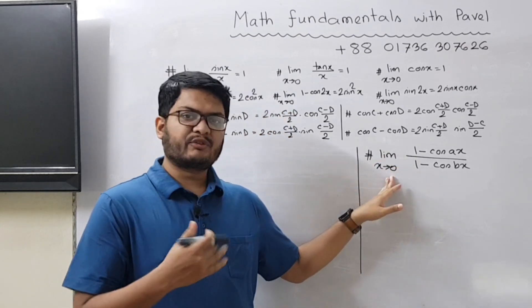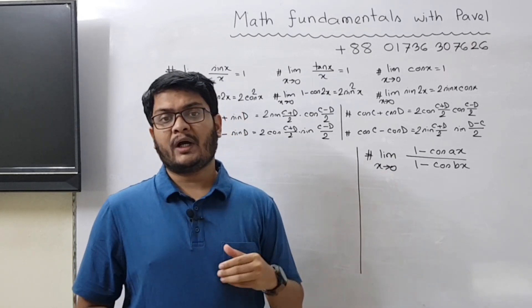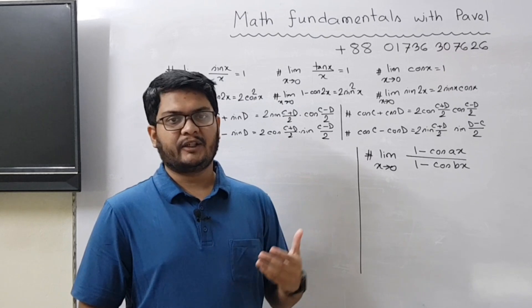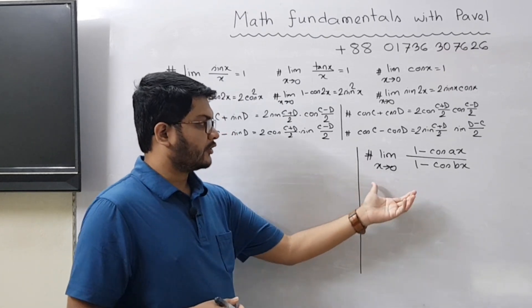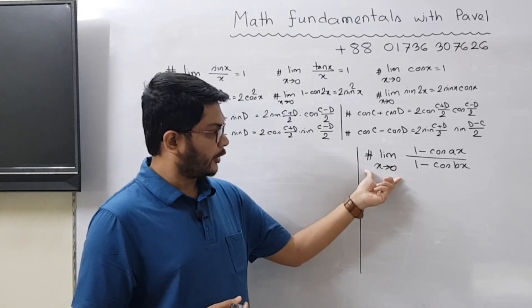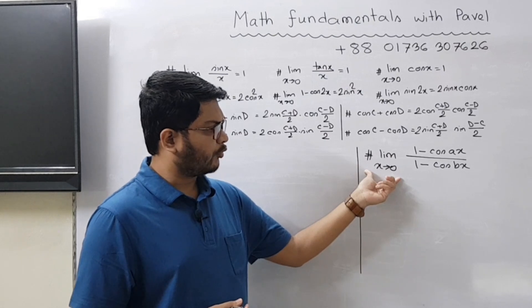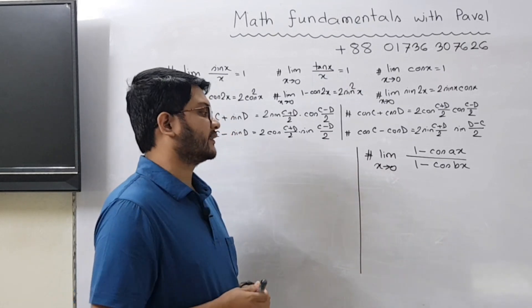In the previous few lectures we have solved some similar type of questions. So I hope those who have watched those lectures it would be very easy for you to understand this particular lecture. Let's start. As you can see the question says limit x tends to 0 and in the numerator we have 1 minus cos ax and then in the denominator we have 1 minus cos bx.